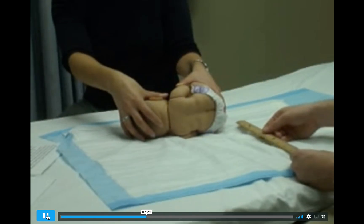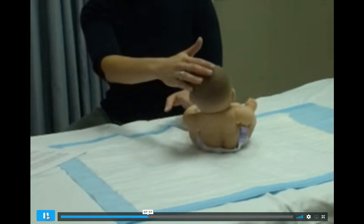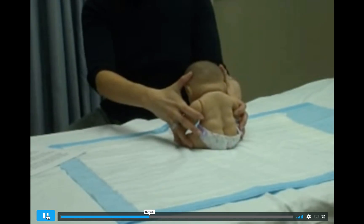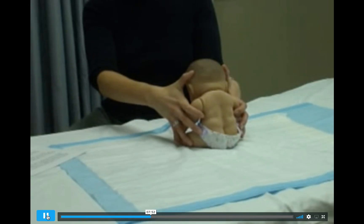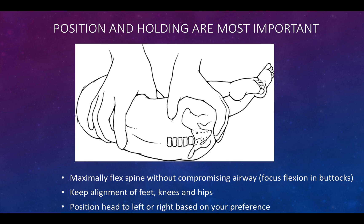For the sitting position, restrain the patient in a seated position with maximal spinal flexion, neck flexed forward and head facing down. In infants, an assistant can hold the infant in a sitting position with an arm and a leg of the infant in each of the holder's hands, while holding the infant's head in a flexed position with their thumbs. Make sure the alignment of the feet, knees, and hips are straight, and position the head where you feel comfortable.